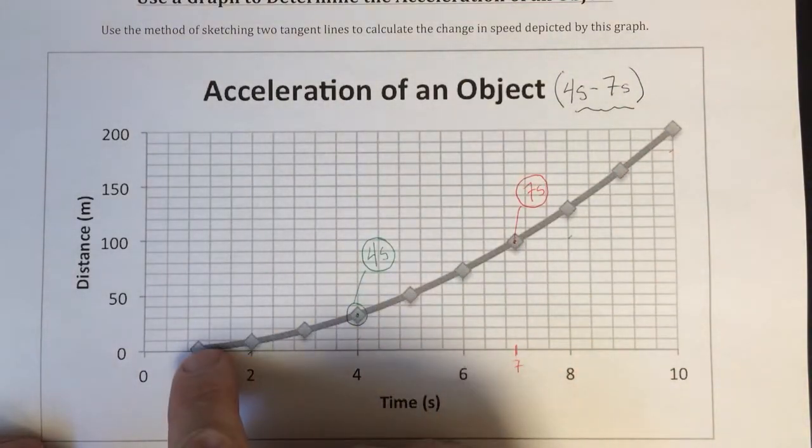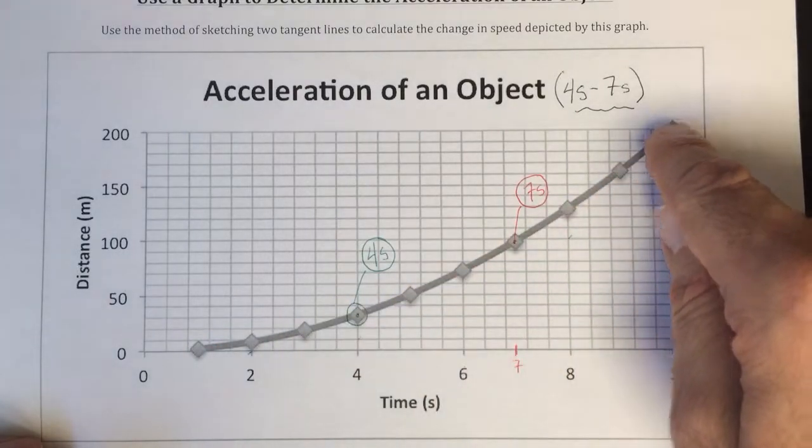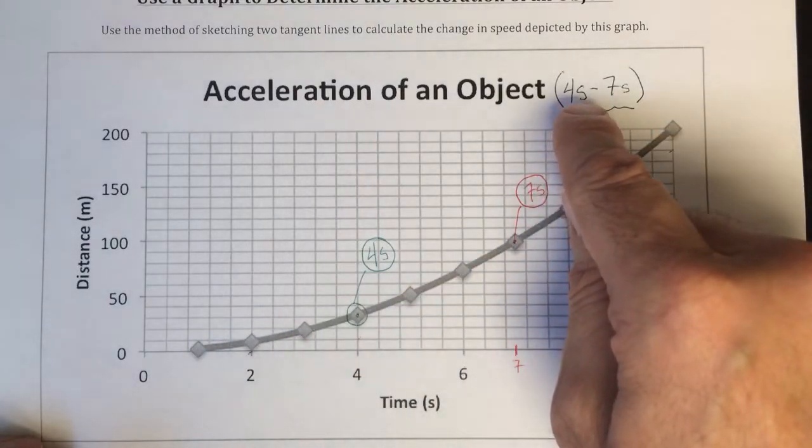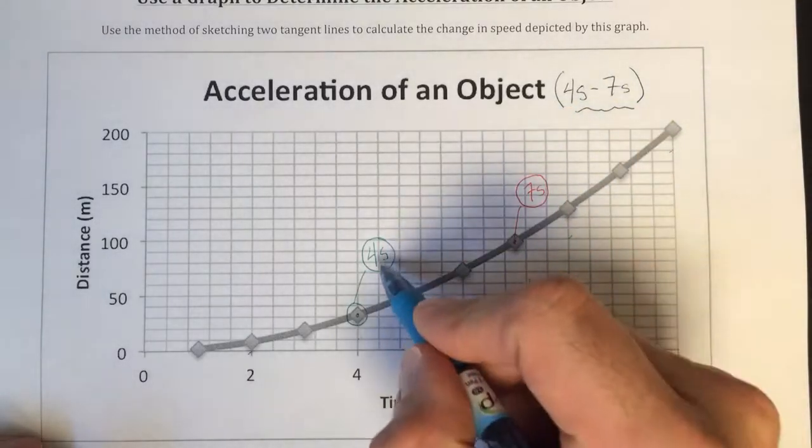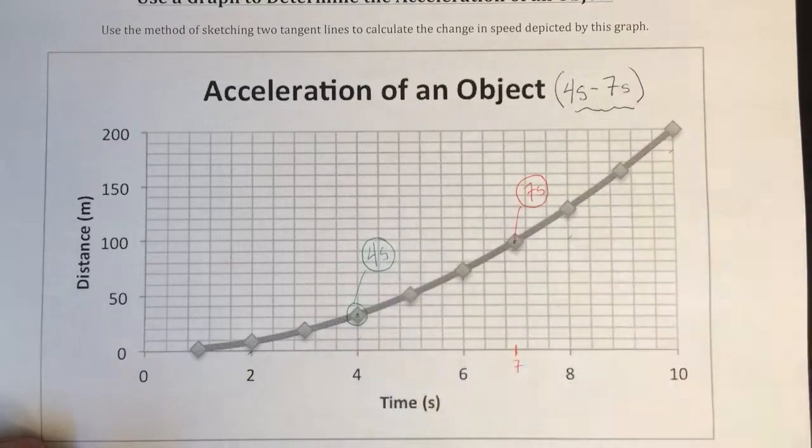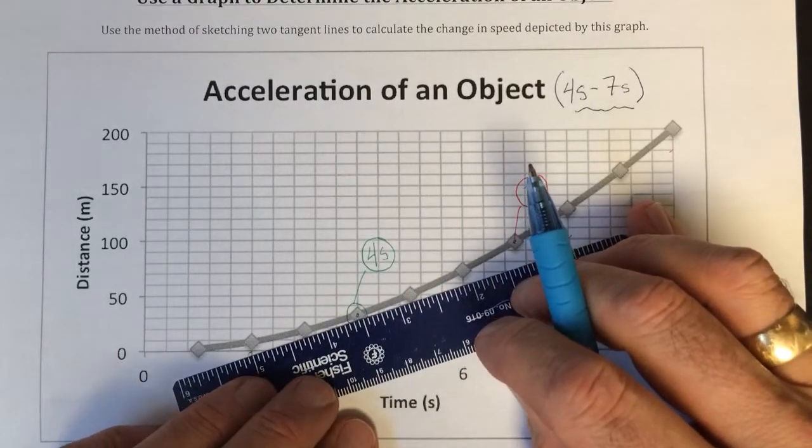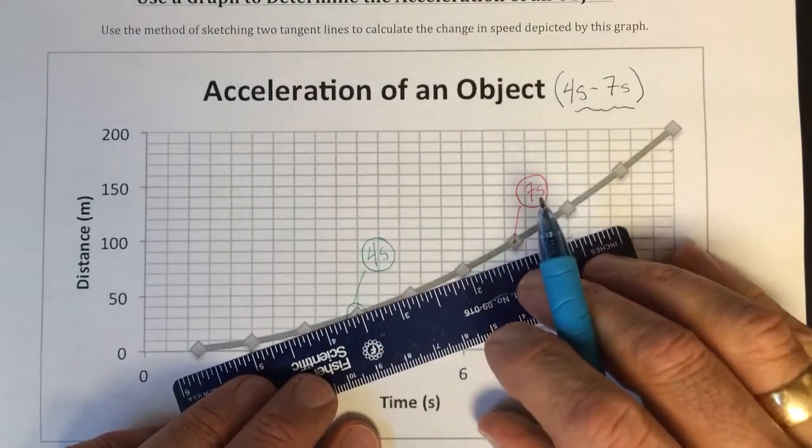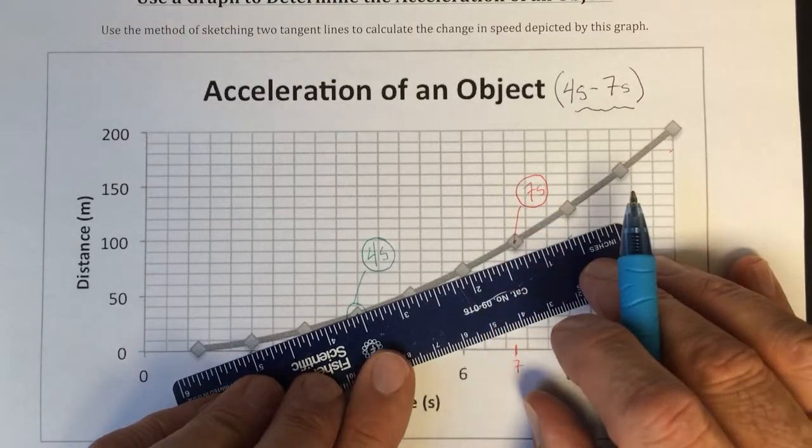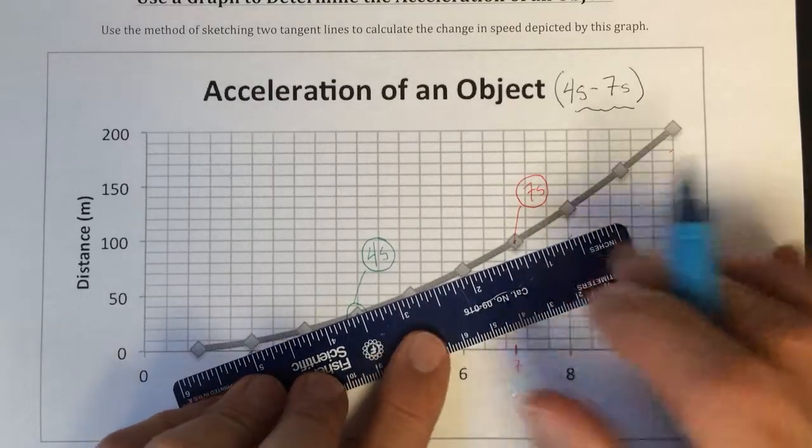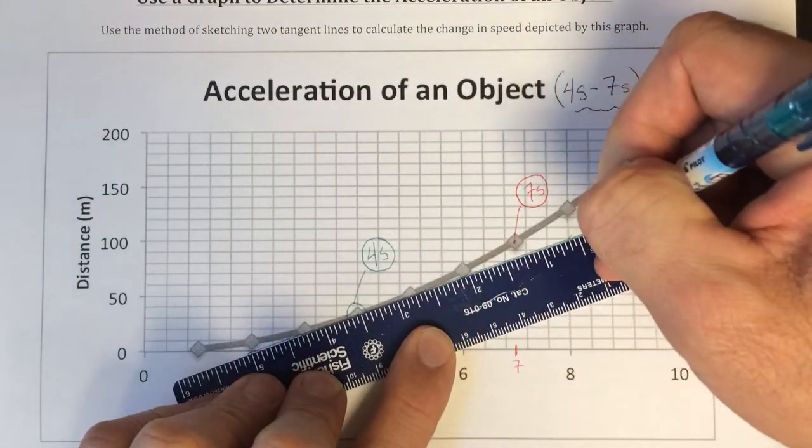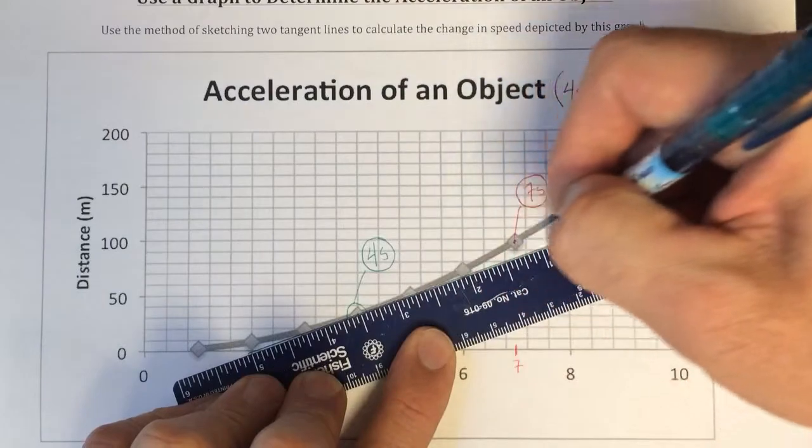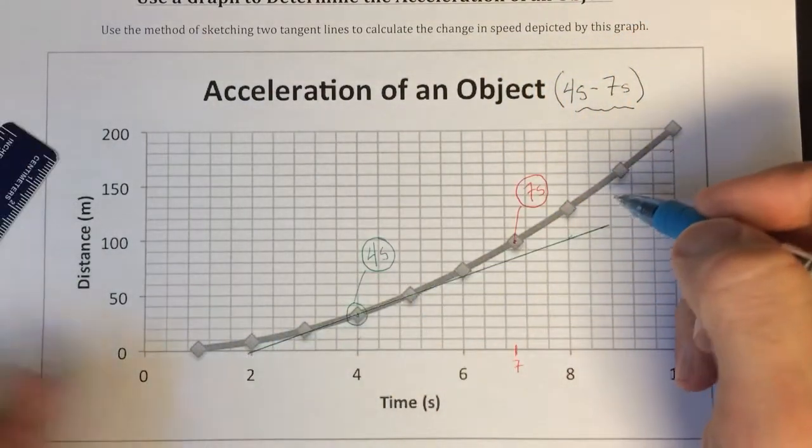That's the range I'm going to be working with. Now the acceleration, since this is a smooth curve, the acceleration is the same anywhere along this curve. But I'm choosing to do my measurements between four and seven seconds. So now that I've identified my first point, I need to draw a tangent line that passes through that point. So I line this up. That looks about right. And I draw a nice straight line using a ruler. You want to make the line reasonably long.